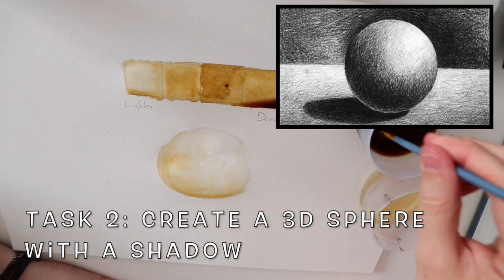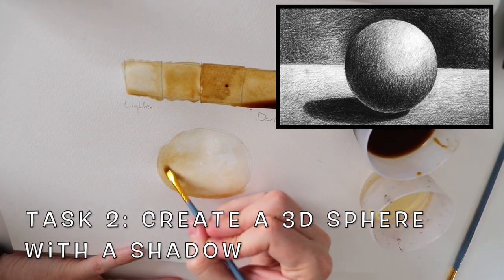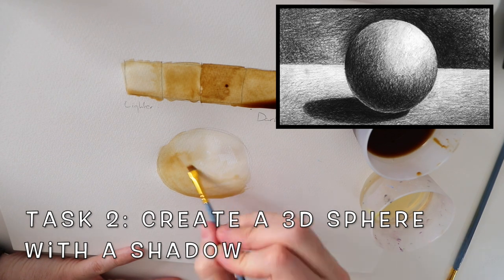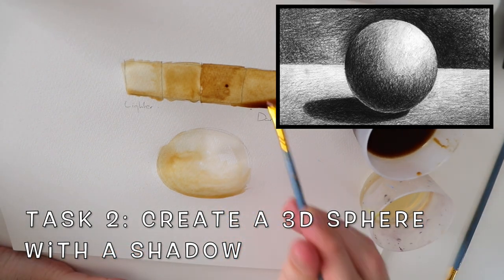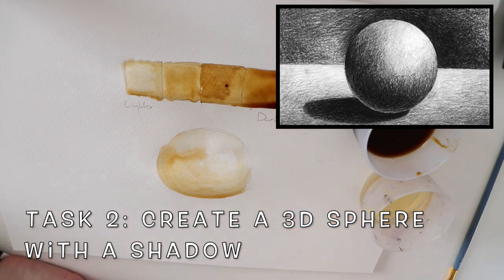We're going to build up this dark and middle side by adding multiple layers of coffee and then eventually adding a different mix that has more coffee and less water to it. I used an image as a point of reference here.